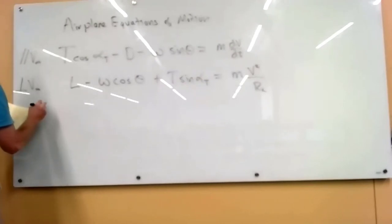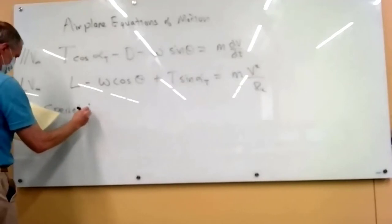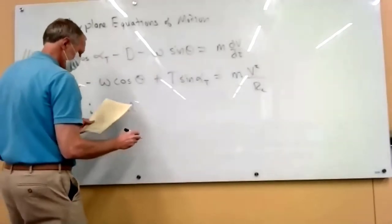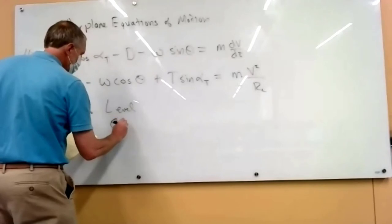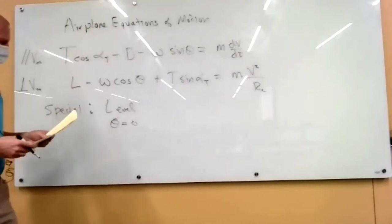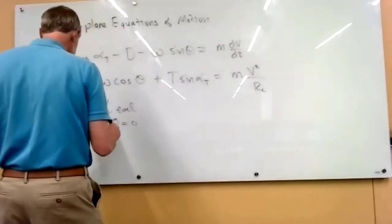So now we're going to specialize these to level flight, which means that the pitch angle is zero. So the airplane is going straight across the horizon, so it's not pitched up. The flight path is not pitched up.